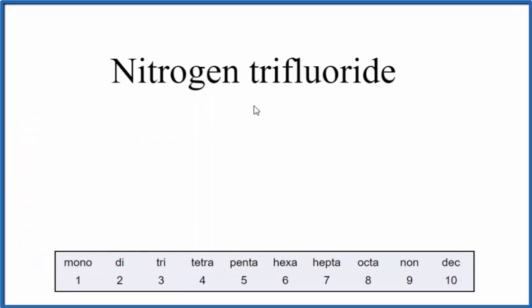We do however need to use prefixes to show how many of each type of atom we have. For nitrogen, N, there's nothing written in front of the nitrogen, so we're going to assume that there's one nitrogen atom.